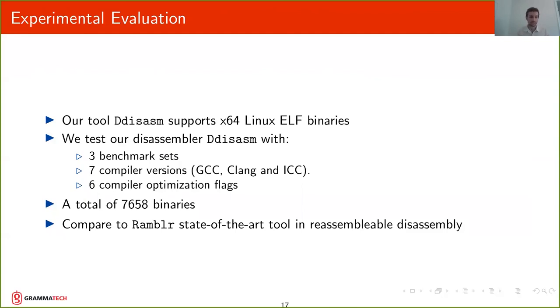We did an experimental evaluation. Our tool ddisasm supports x64 Linux ELF binaries. So we test our disassembler, ddisasm, with three benchmarks, seven compiler versions, including versions of GCC, Clang, and ICC, and six compiler optimization flags, which makes a total of 7,658 binaries. And we compare ddisasm to Rambler, which is the state-of-the-art tool in reassembleable disassembly.